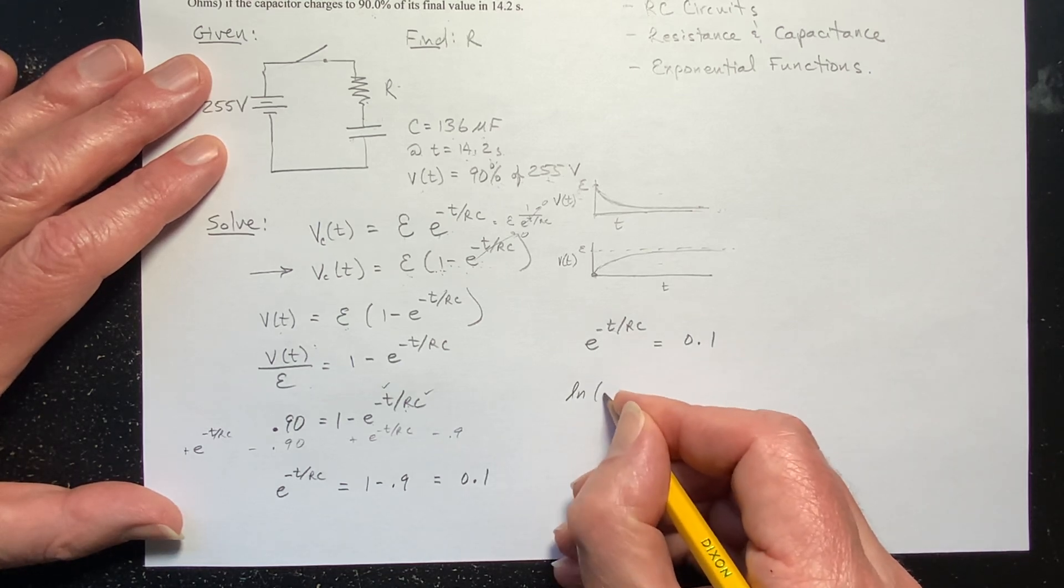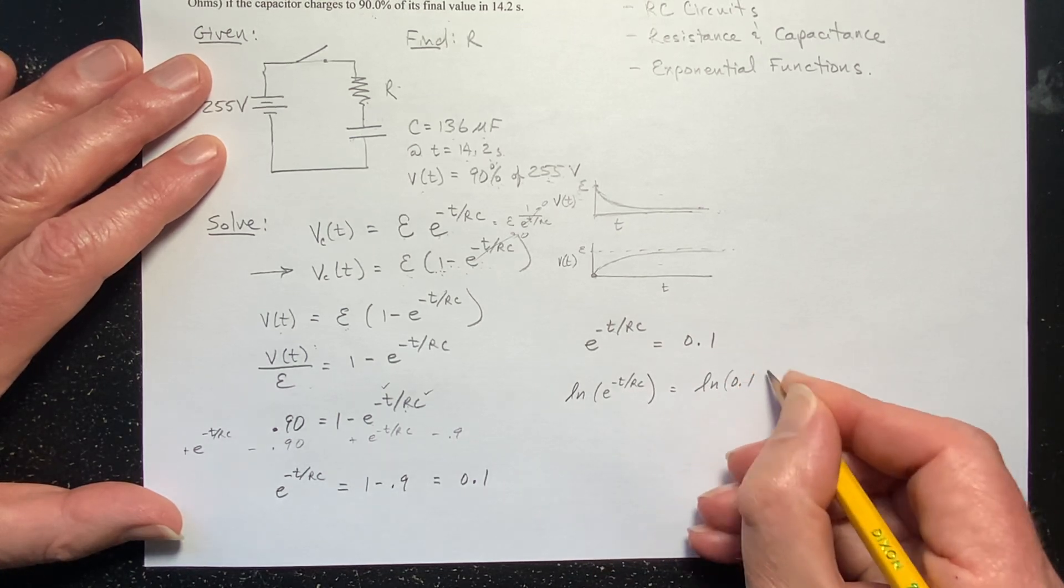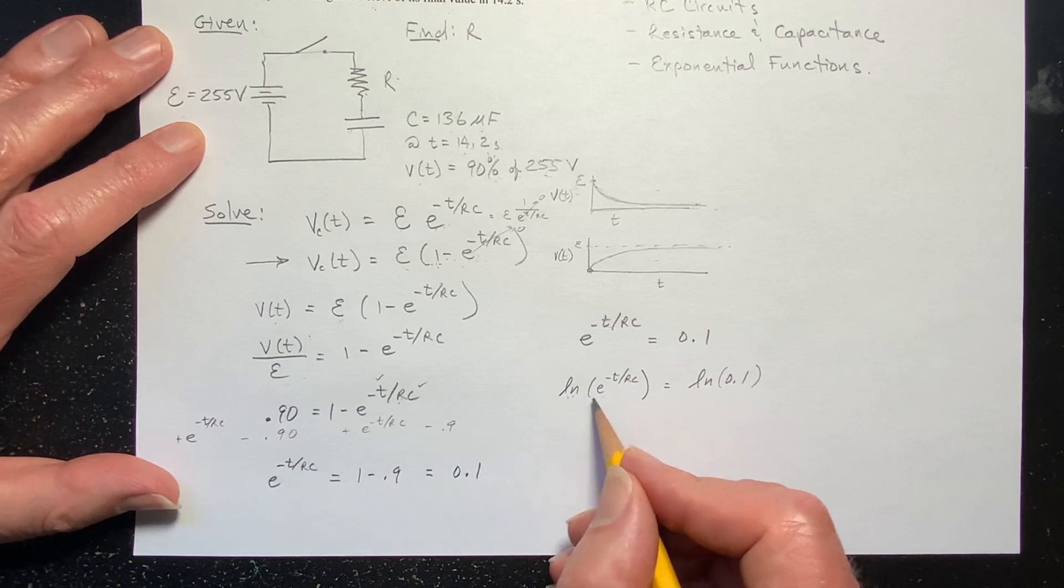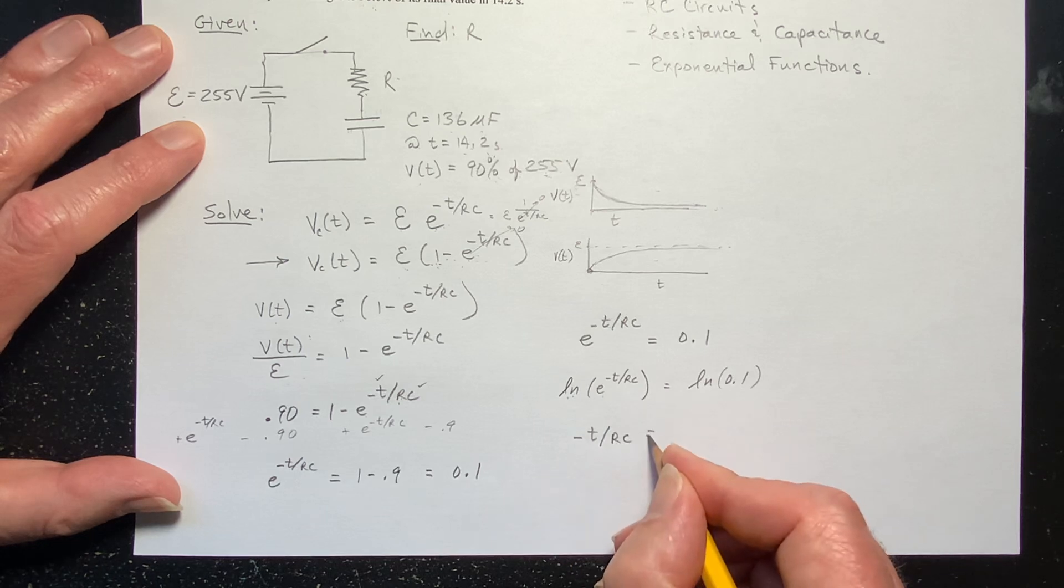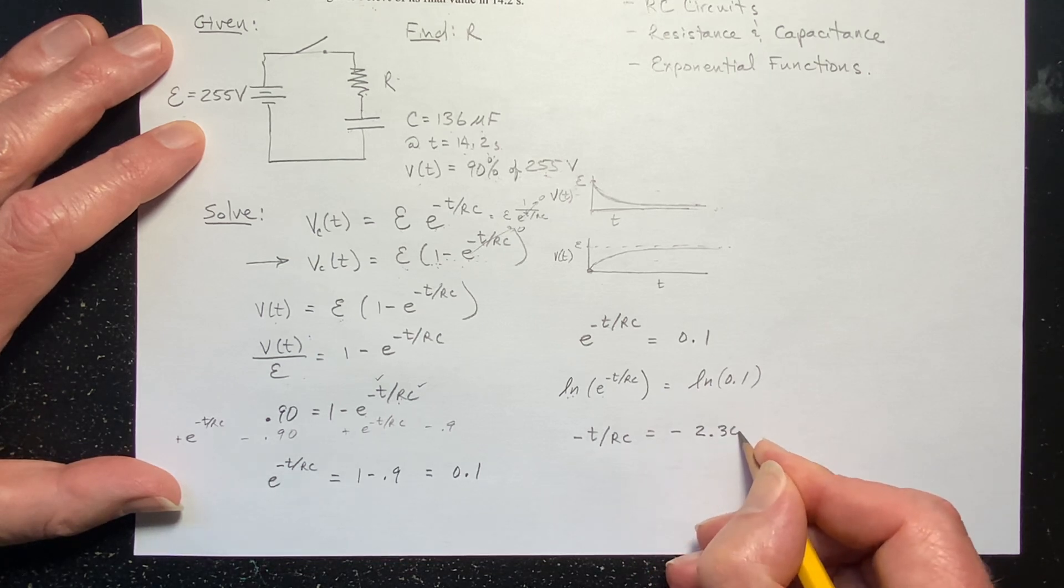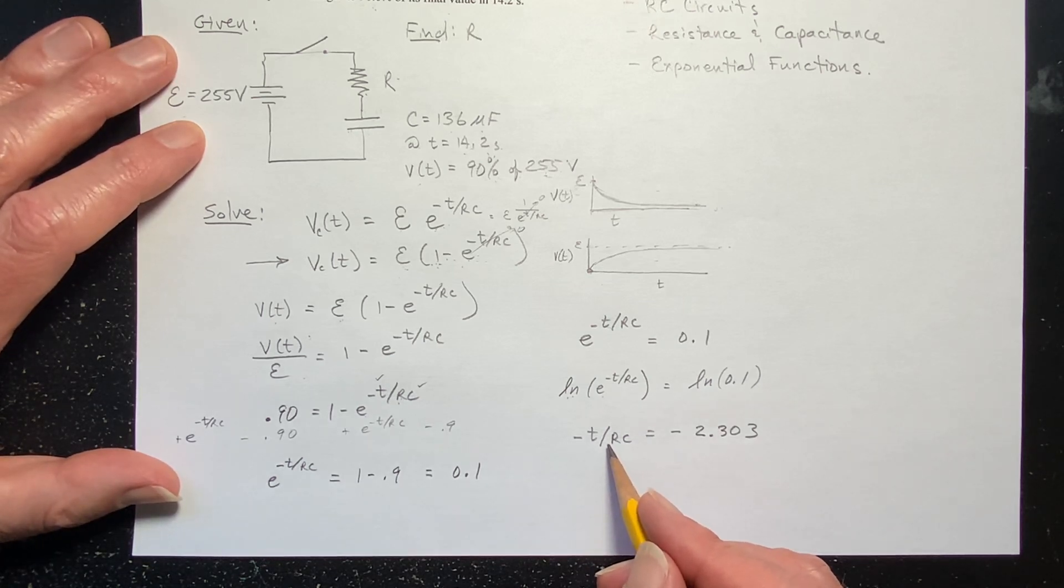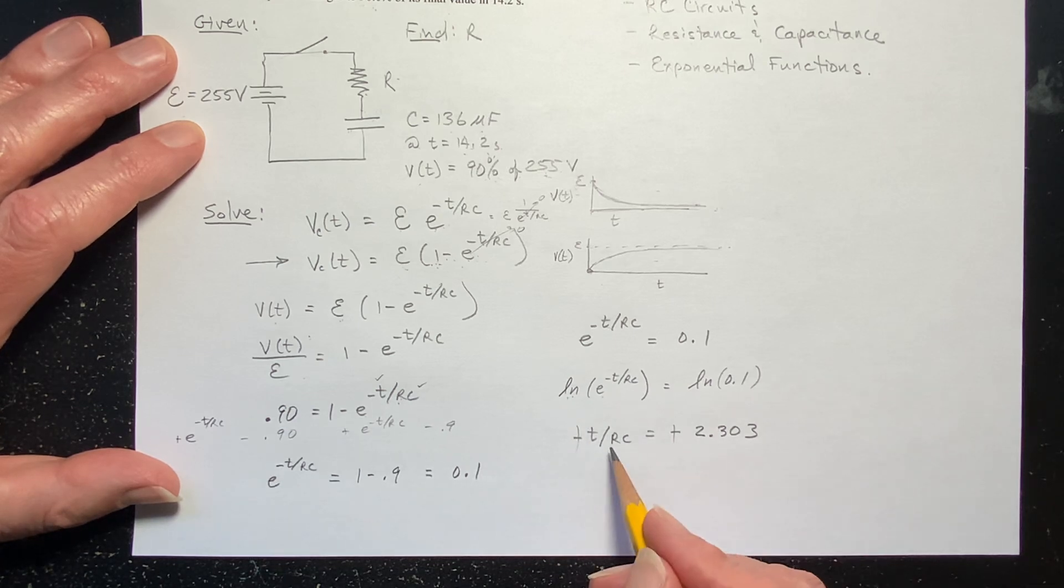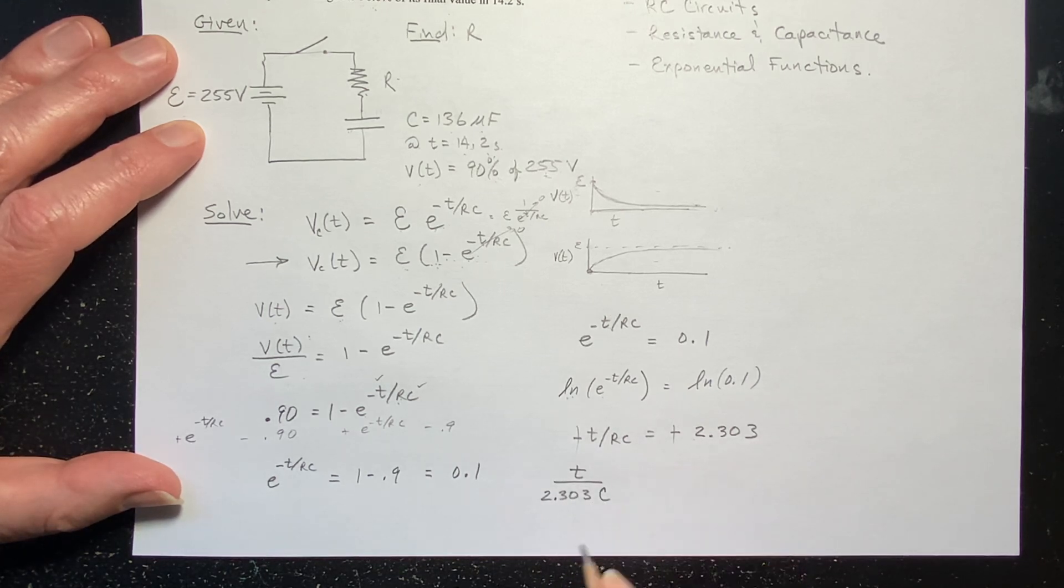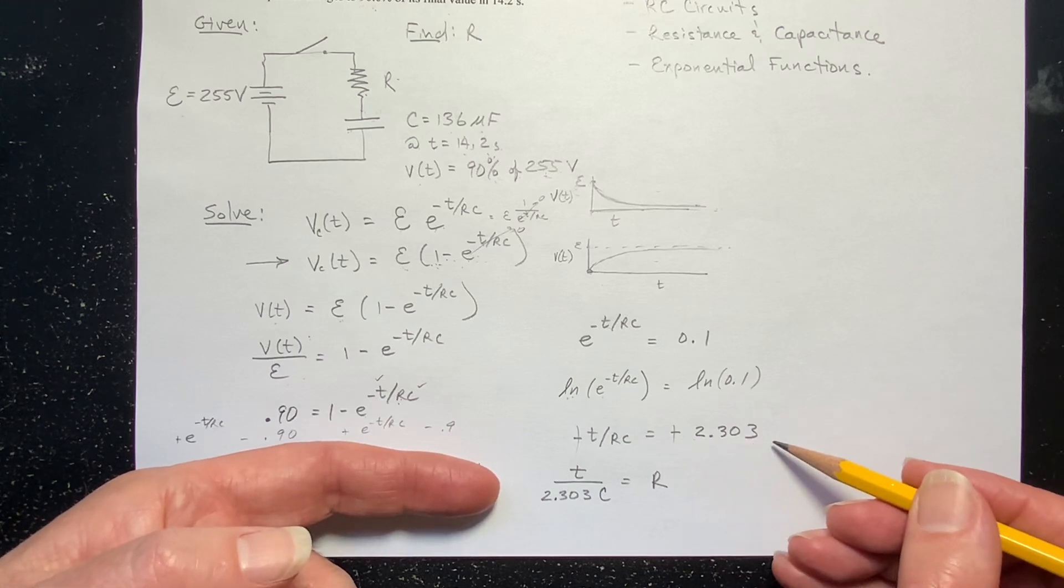So anyway, now we're going to take the natural log of both sides. So this is the natural log of E to the negative T over RC equals the natural log of 0.1. Now plug that in your calculator. You don't need to plug the left side because these are inverse operations, right? So you just get negative T over RC. And the natural log of 0.1, plug that in your calculator. When I did, I got negative 2.303. And now I'm solving for R. I can get rid of the negative sign. So this is T over 2.303 times C equals R. I just multiplied both sides by R and divided both sides by 2.303. And this is what you get.